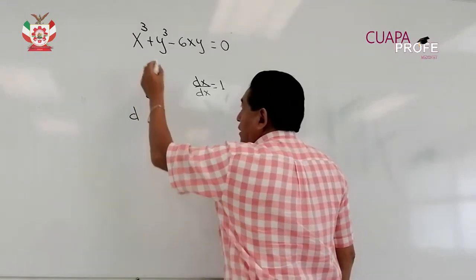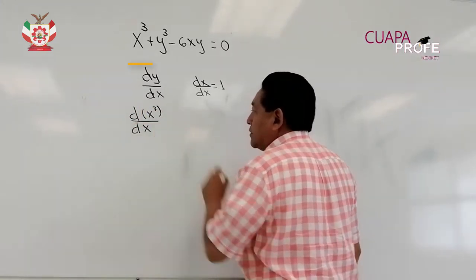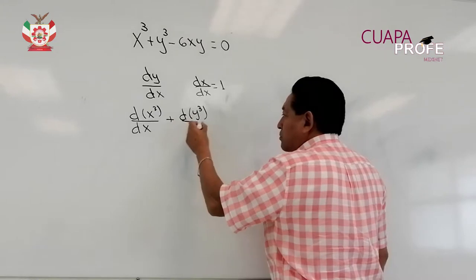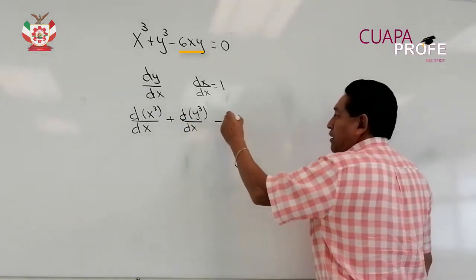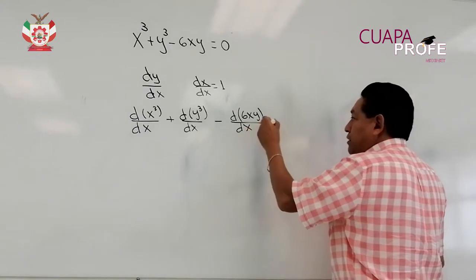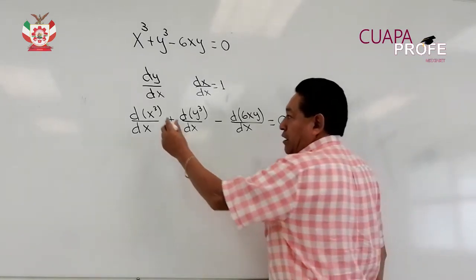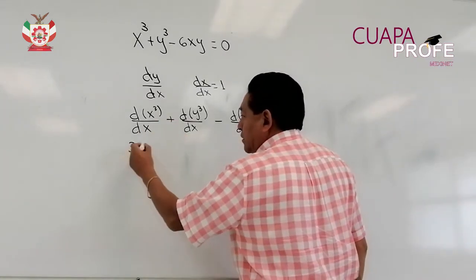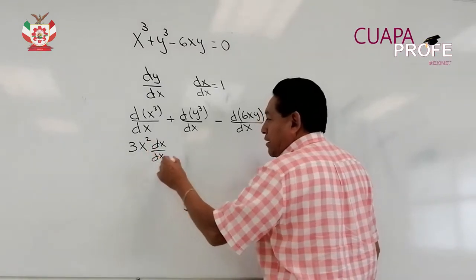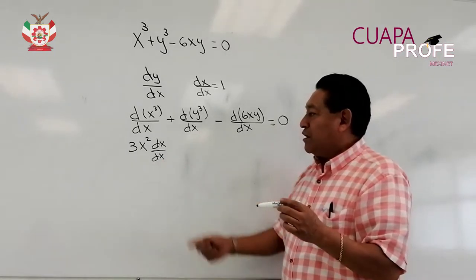Vamos a escribir la derivada de cada uno de los términos: la derivada de x cúbica con respecto de x, más la derivada de y cúbica con respecto de x, y menos la derivada de la expresión 6xy con respecto de x, y esto será igual a 0. Derivamos x cúbica y sería 3x cuadrada; la derivada de x con respecto de x no es necesario dejarla escrita porque sabemos que es 1.